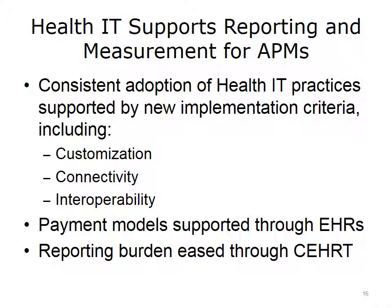One example is EHRs that use preloaded electronic quality measures. These systems can now calculate complex reporting factors and patient population exclusions. For instance, electronic health record technology can accurately measure how many women should receive a mammogram by excluding women who've had bilateral mastectomies and those who recently had a mammogram. Thus, the physician or another staff member orders the test only for the women who need them. Without certified electronic record technology, it's almost impossible to keep track of all the requirements and exclusions.